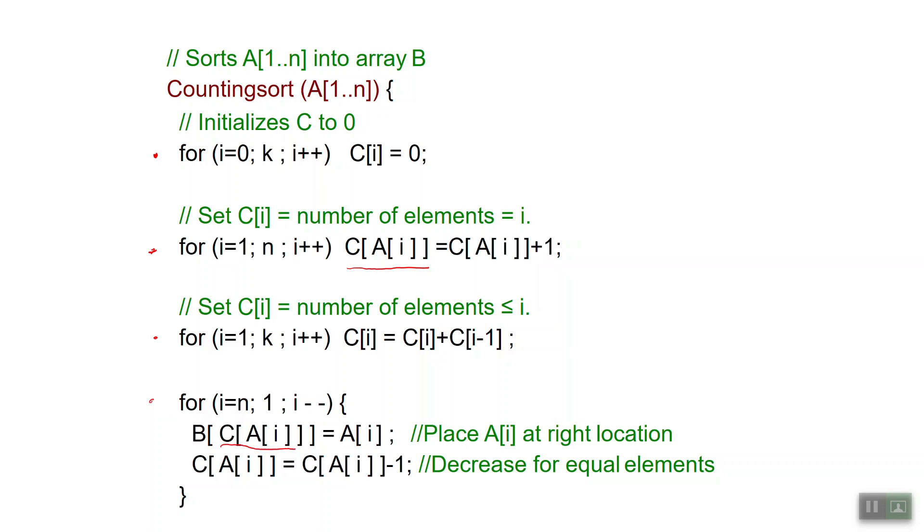To take into account that some numbers may be repeated we now have to decrease the location A[i] of C by 1 and that's accomplished in the last instruction of the last for loop.